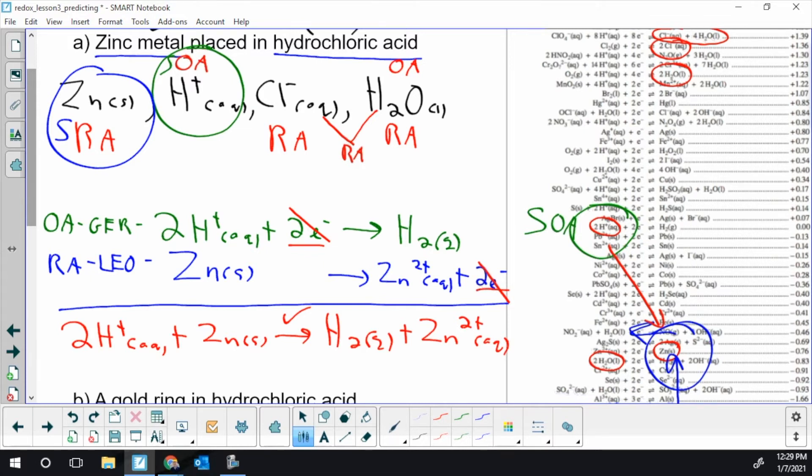So we've just finished our first predicting redox reaction. Chloride was a spectator ion and water didn't do anything. Water is another spectator. So you cannot store an acid in a zinc container. If I had a zinc bucket or zinc vessel, a zinc water bottle, and I put acid in it, it's going to react with it and eat a hole right through that zinc bottle.